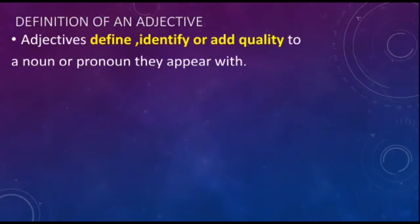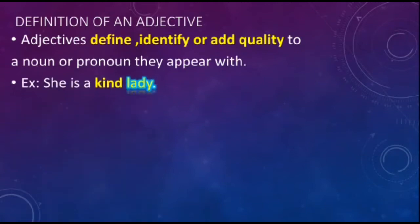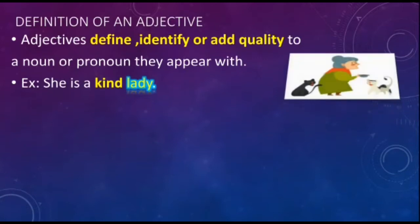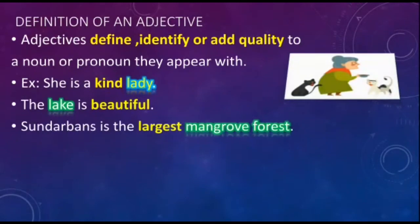An adjective not only describes a noun but also identifies and defines it — and this applies not just to nouns but to pronouns as well. For example, 'She is a kind lady.' In the sentence 'The lake is beautiful,' the lake is a noun which has been described as beautiful.